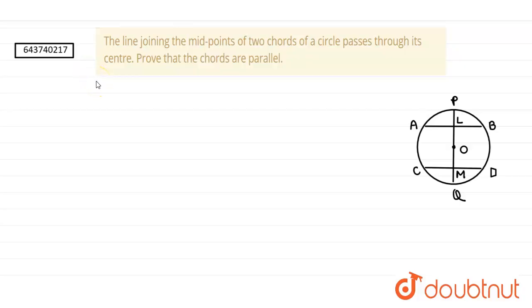The question says that the line joining the midpoints of two chords of a circle passes through its center. Then we have to prove that the chords are parallel. So for solving this question, first the things that are given to us in the question.